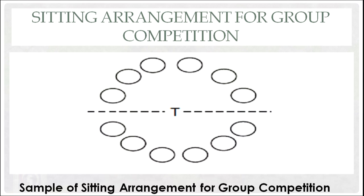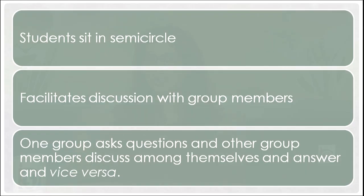Then we talk about the sitting arrangement for a group competition. In this arrangement there are two semicircles — children sit in two semicircles denoting two teams, with the teacher sitting in the center. It is a competition, generally a quiz, done within the class after completing a chapter as an assessment activity. This facilitates discussion within group members while maintaining some distance from the competitor team. One group asks a question, the other group members discuss among themselves and then answer, and the process is repeated.